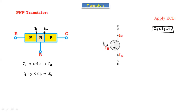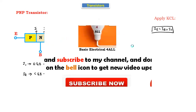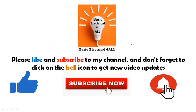This is the equation for the PNP transistor: emitter current is equal to base current plus collector current. This concludes today's class on the introduction of the transistor. In the next class, we will discuss more about transistors.